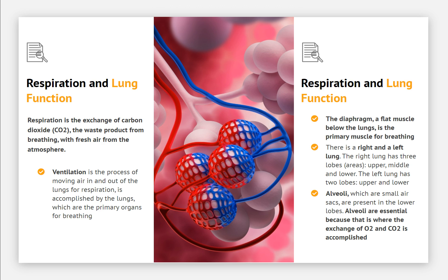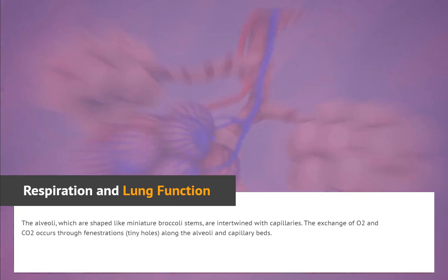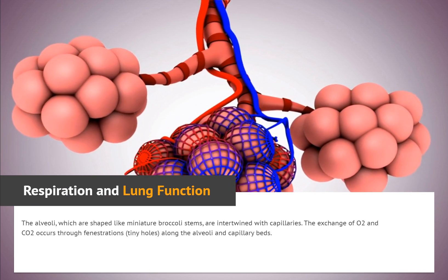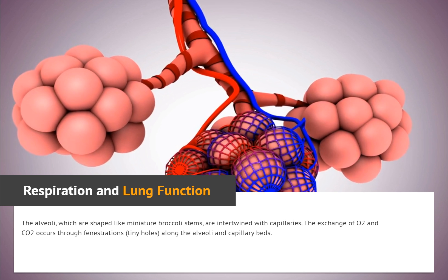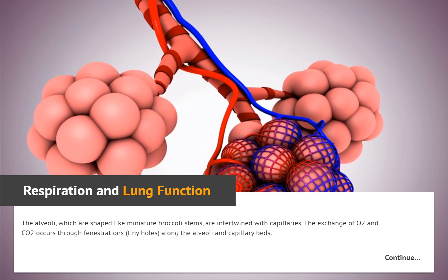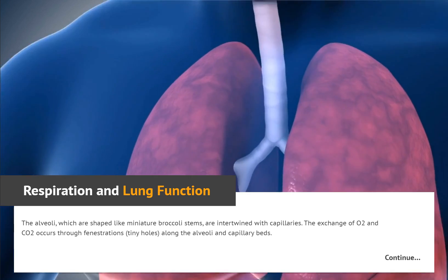Alveoli, which are small air sacs, are present in the lower lobes. Alveoli are essential because that is where the exchange of oxygen and carbon dioxide is accomplished. The alveoli, which are shaped like miniature broccoli stems, are intertwined with capillaries. The exchange of oxygen and carbon dioxide occurs through fenestrations — tiny holes — along the alveoli and capillary beds.